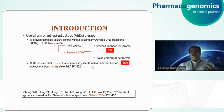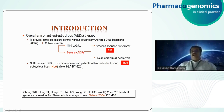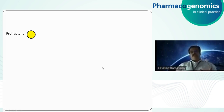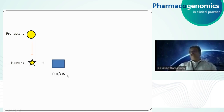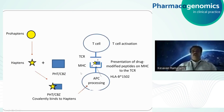Those carrying HLA-B*1502 are most susceptible to serious cutaneous adverse reactions like SJS and TEN. The mechanism involves hapten formation — a pro-hapten must be converted into an active hapten. When drugs like phenytoin or carbamazepine are given, they covalently bind to the hapten. This complex is processed by antigen-presenting cells.